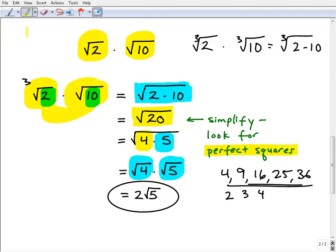So the square root of 4 we can write as—the square root of 4 is the same thing as 2. So now we have 2 times the square root of 5, and this would be the correct answer.